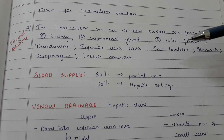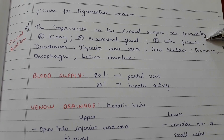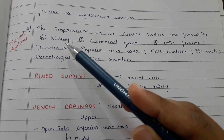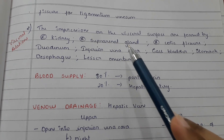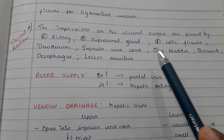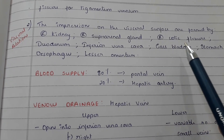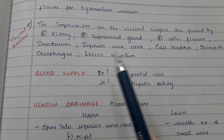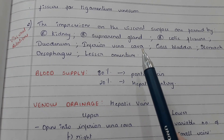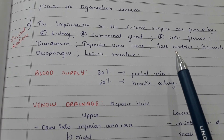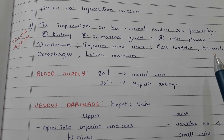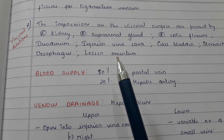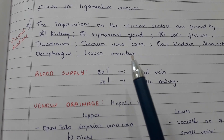The impressions on the visceral surface are formed by the right kidney, right suprarenal gland, right colic flexure, duodenum, inferior vena cava, gallbladder, stomach, esophagus, and the lesser omentum.